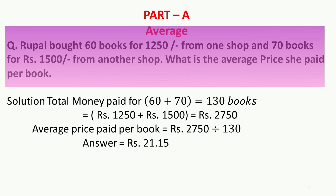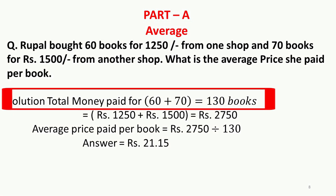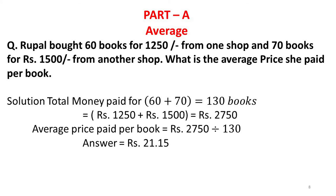Rupal bought 60 books for Rs. 1250 from one shop and 70 books for Rs. 1500 from another shop. What is the average price she paid per book? Total books = 60 + 70 = 130. Total money spent = 1250 + 1500 = Rs. 2750. Average price = 2750 ÷ 130 = Rs. 21.15 per book.